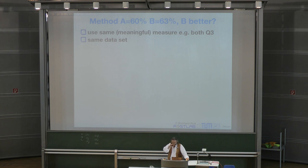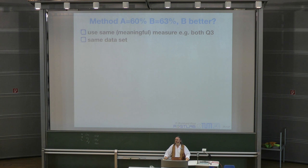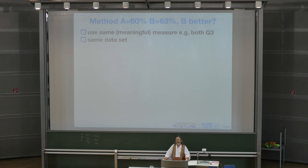Assume you want to retrain that published method on your data. Most of the time, certainly for old methods, this is not trivial. Data may not be available, you cannot make it run — there are all kinds of issues, especially for neural network predictions where you have to set up networks, have the data sets, and do alignments.